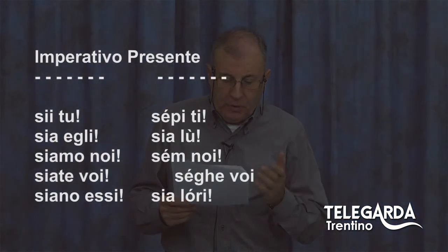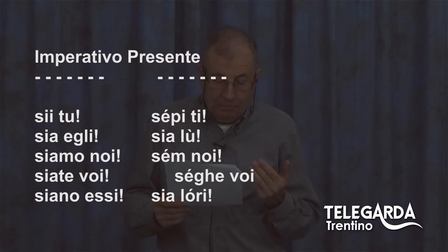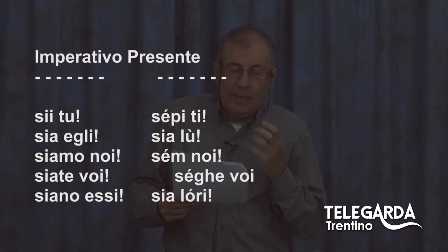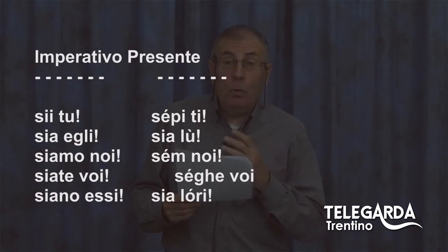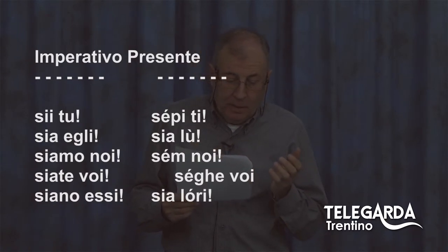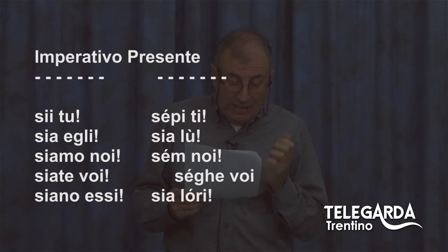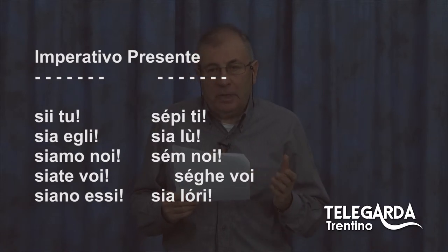Mi sono messo in piedi, perché arriva quel modo curioso reso famoso da Fantozzi quando dice 'batti lei, facci lei': è l'imperativo, l'imperativo presente, il modo del comando. L'imperativo presente del verbo essere in italiano: sia tu, sia egli, siamo noi, siate voi, siano essi. Manca ovviamente la prima persona singolare. In dialetto: sia tu diventa sepi tu; sia egli diventa sia lu, ossia ela se è femminile; siamo noi diventa sem noi; siate voi diventa se che voi; siano essi diventa sia lori, ossia lore nel caso del femminile. Questo era l'imperativo presente.